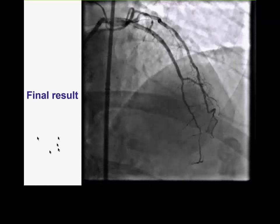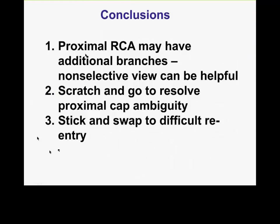This case highlights several things. First, how to resolve where the vessel is before trying to open a CTO — it is very important to understand where the vessel we're trying to get to is. One lesson is that sometimes we have an additional branch coming from the proximal RCA, from the same ostium or different ostia from the aorta, providing flow to collaterals in the LAD or even the right coronary artery. The RCA may have many anatomic variants, and one should always be open to the possibility of early origin branches supplying the contralateral vessel.